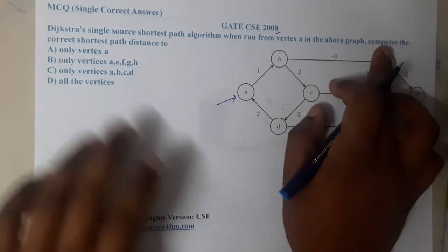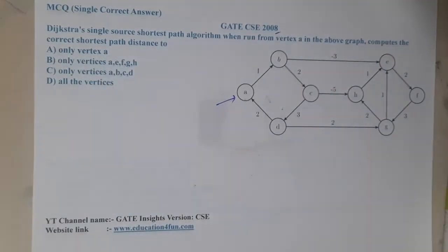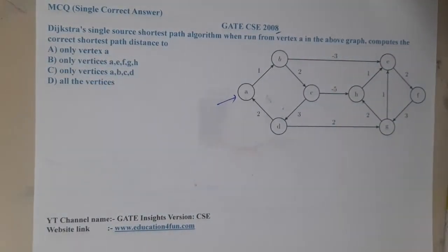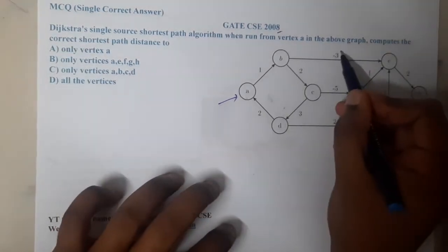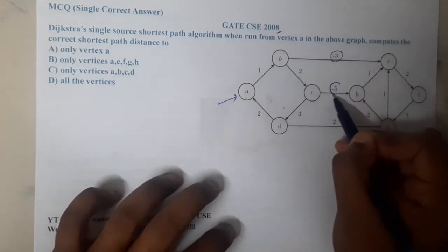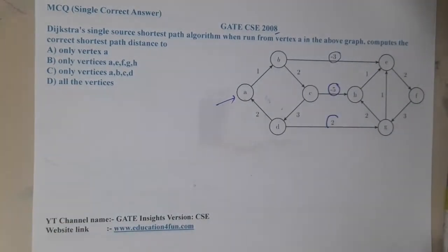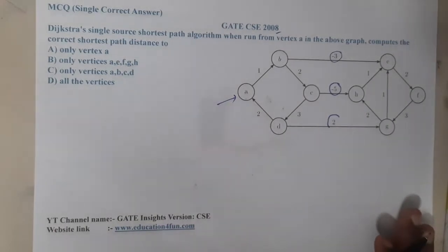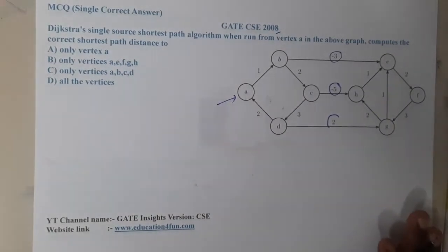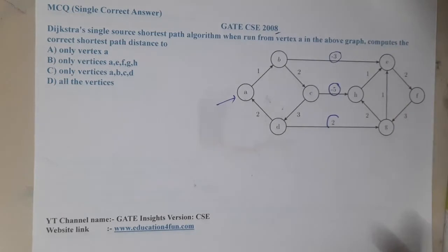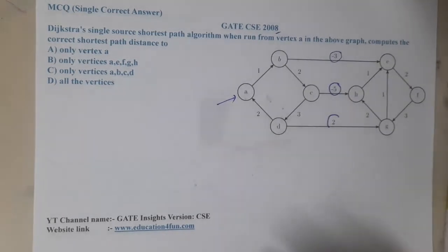So most of you might be getting doubt about why exactly they are asking correct path. Because here there are two negative weights. Whenever you are trying to solve a graph with negative weights, it is not a good idea to use Dijkstra. So that is the reason why they are saying for how many nodes it is going to give the correct answer.